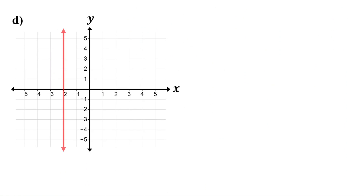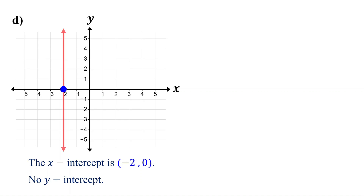Notice the line crosses only the x-axis, so it has only an x-intercept. To find it, as we did before, first locate where the line crosses the x-axis, then identify the coordinates of this point. The x-value is negative 2 and the y-value is 0. Therefore, the x-intercept is the point (-2, 0). Since the line does not cross the y-axis, it does not have a y-intercept.